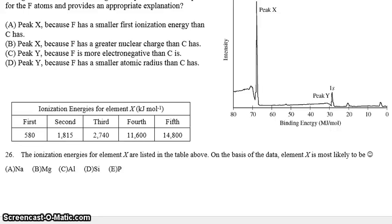We have the ionization energies for some element X unknown listed in the table above. And on the basis of this data, element X is most likely to be. You'll notice that there's a jump with every successive electron being taken away. However, there's a huge jump between the third and the fourth electron being taken away. There's a very, very big jump here, which means this is an element whose fourth electron is a core electron.